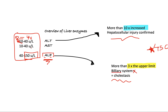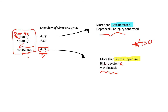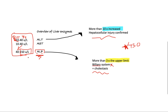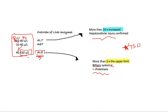Just remember all these values: 10 to 40 for ALT and AST, and 40 to 150 for alkaline phosphatase. Hope that was useful — please like and subscribe, and until the next one.